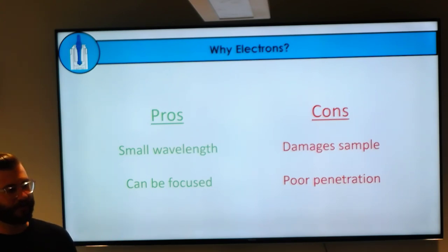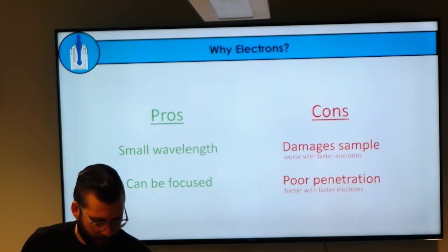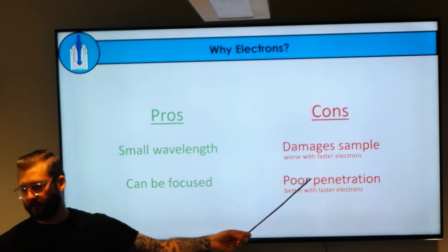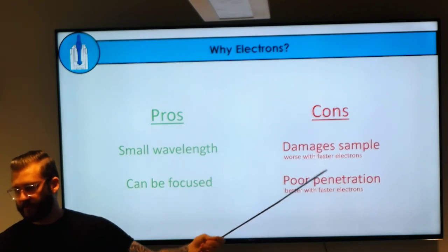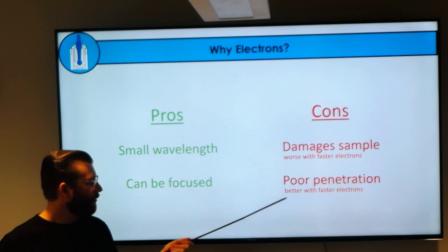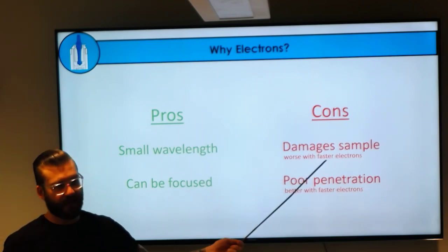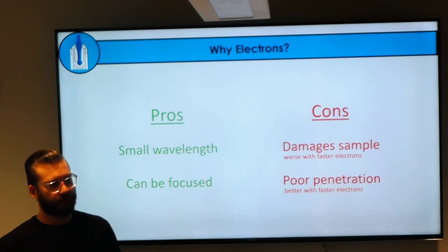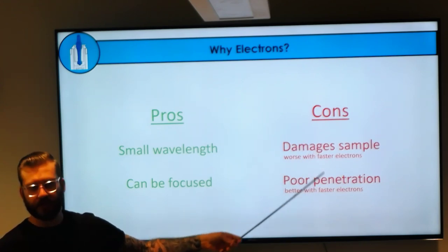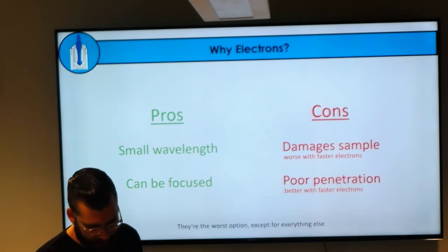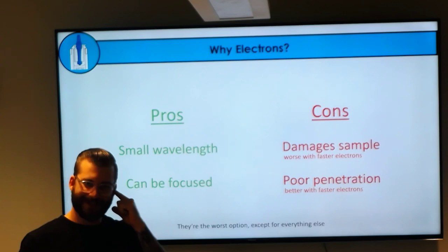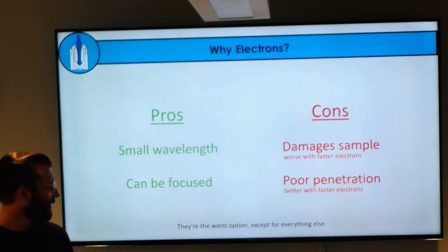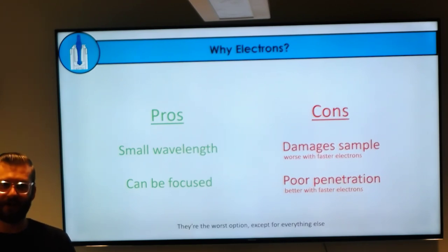Ideally for single particle we like to stay under 200 nanometers. What's interesting is that sample damage gets worse if you use higher voltages—faster electrons—but sample penetration gets better. So it's a constant tradeoff. One journal club assignment will examine work by Chris Russo's lab, causing us to rethink the best voltages for electron microscopy. Electrons are basically the worst option except for every other option; if we could use x-rays or neutrons those would probably be better, but right now we're stuck with electrons.